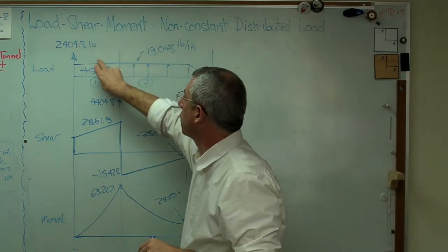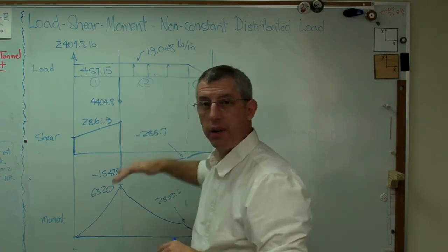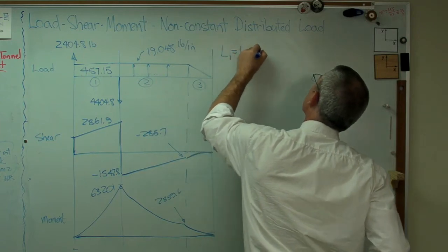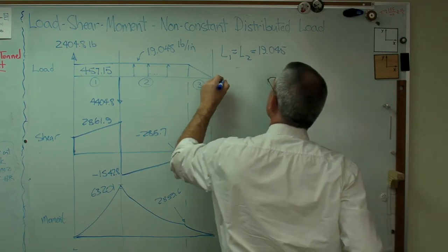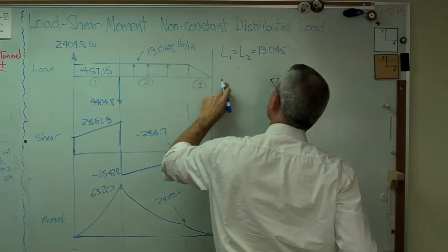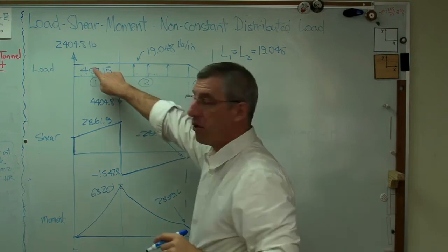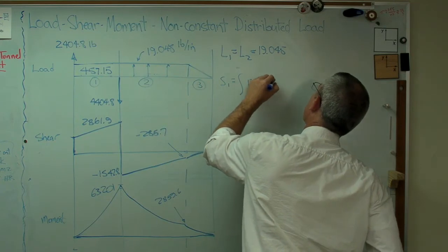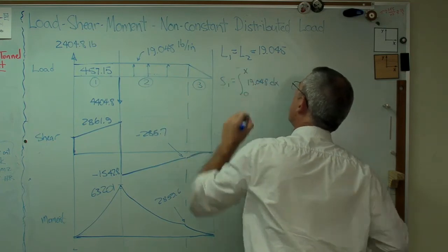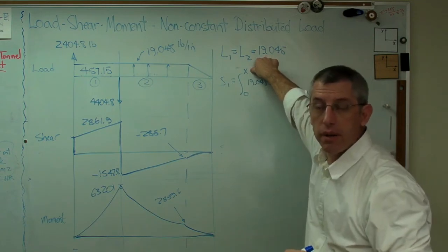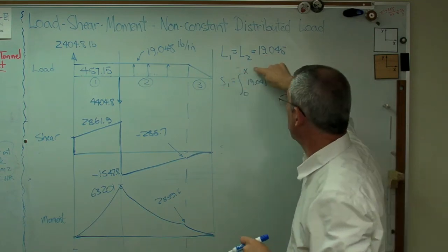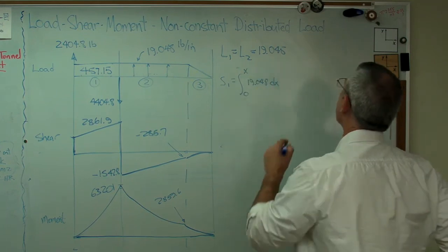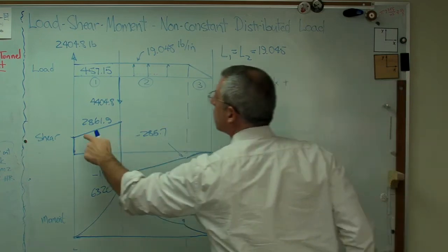Load one and load two are the same, and those are just constants. So shear one is going to be the integral of this. So that's easy. Integral of 19.048 dx from zero to x. Now, x in the upper limit. I want this to be a function, not a number, so I'm going to make it x in the upper limit. This is valid from x equals zero to x equals 24. And I also have to include that initial shear right there.